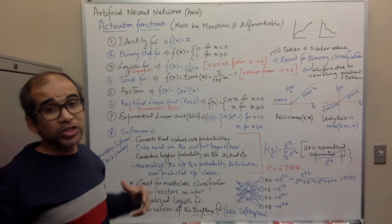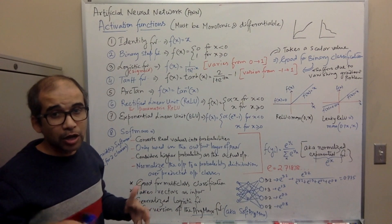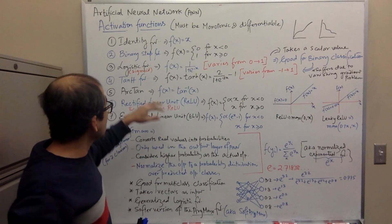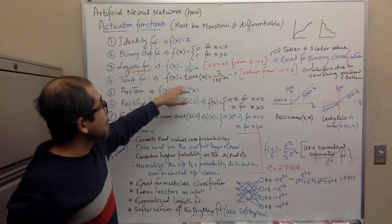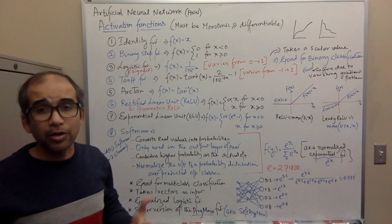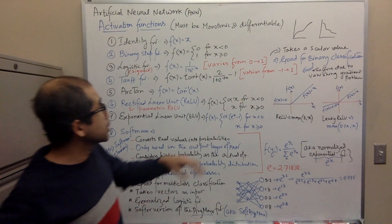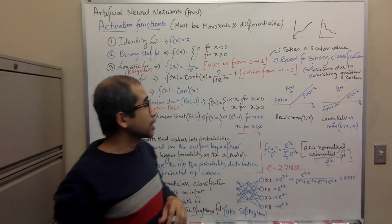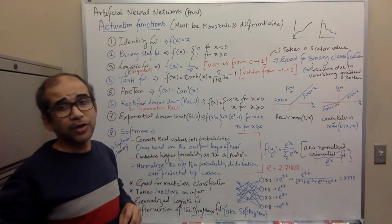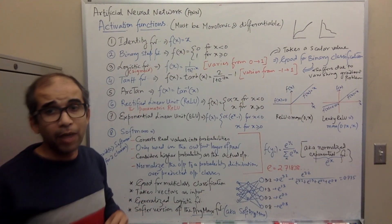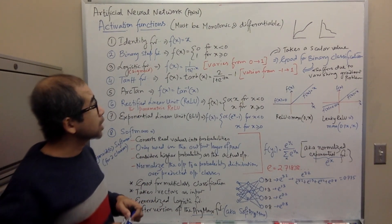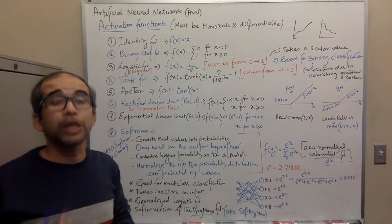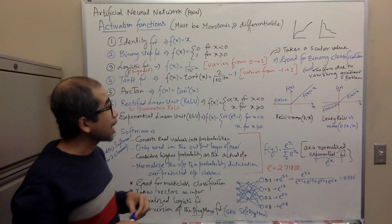The tanh function is also an S-shaped curve, similar to the sigmoid function but more pronounced. It varies from minus one to one, whereas the logistic function varies from zero to one. Both the logistic function and the tanh function are mostly used for binary classification.